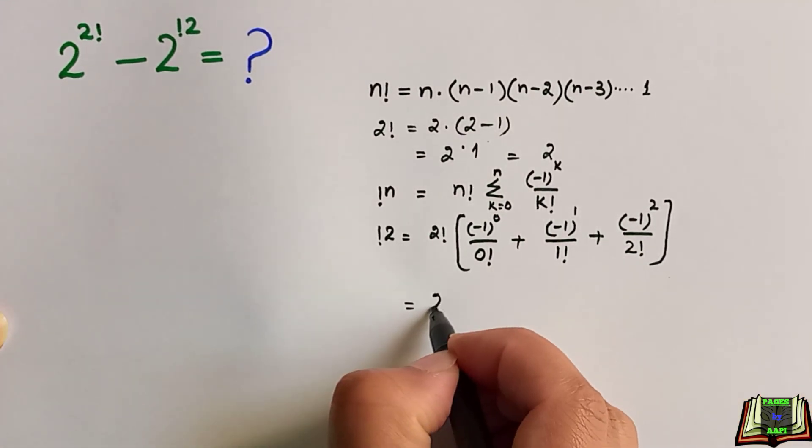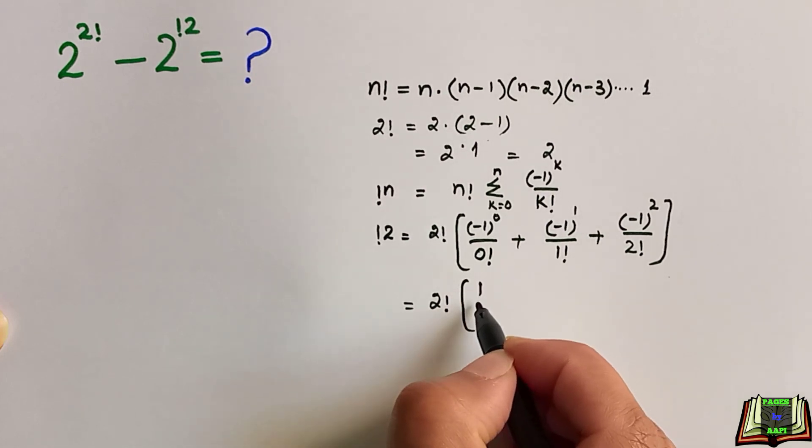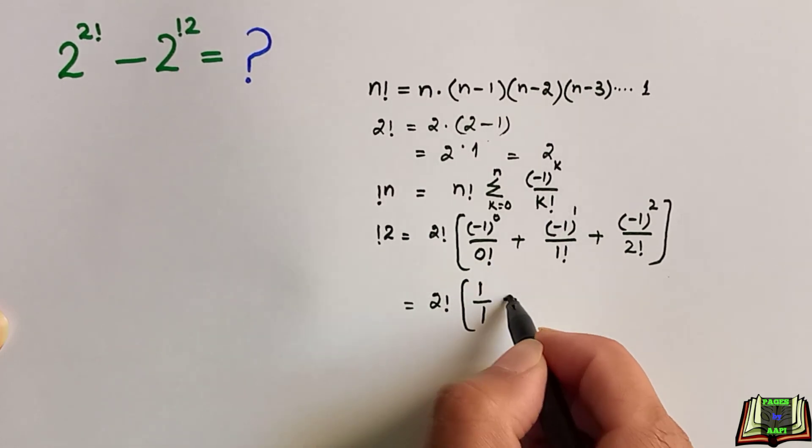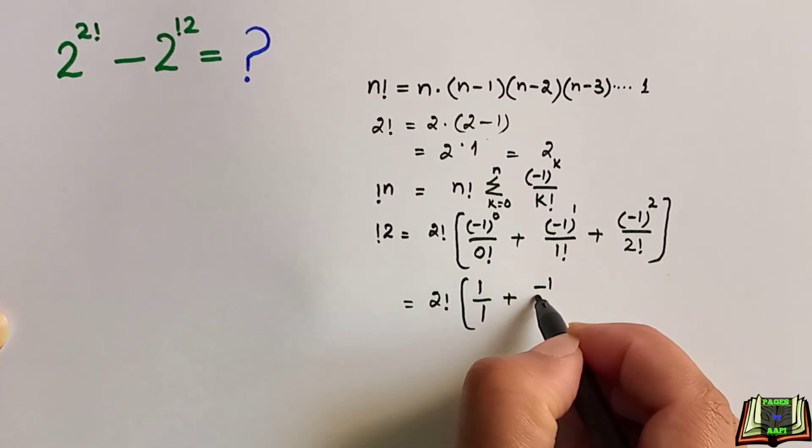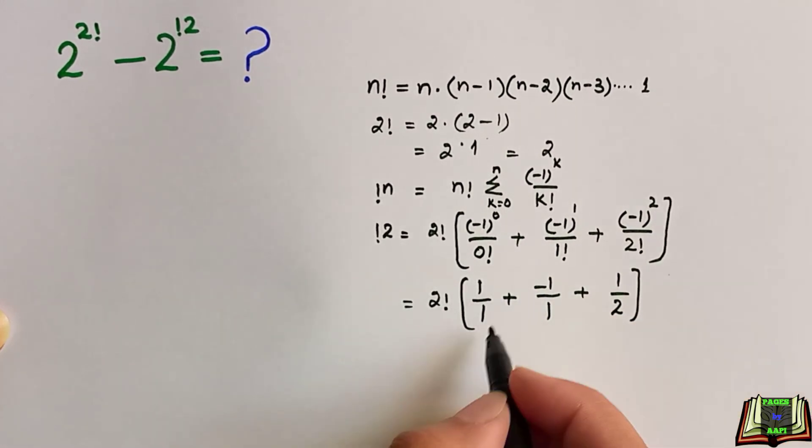After simplification, it equals 2 factorial times [(-1)^0 is 1 over 0 factorial is 1, minus 1 to the power 1 is -1 over 1 factorial is 1, minus 1 to the power 2 is 1 over 2 factorial is 2].